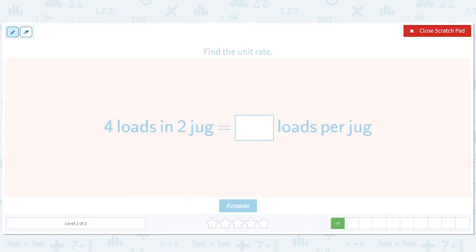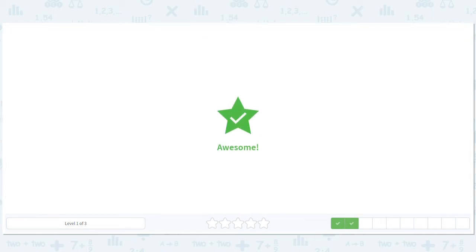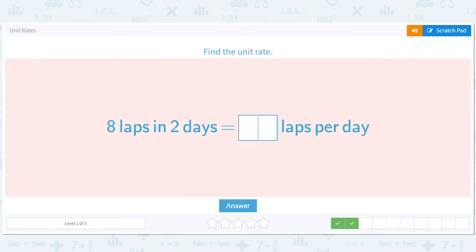Four loads in 2 jugs: 4 divided by 2, 2 loads per jug. Eight laps in 2 days, how many laps in a day? 8 divided by 2, 4 laps a day.